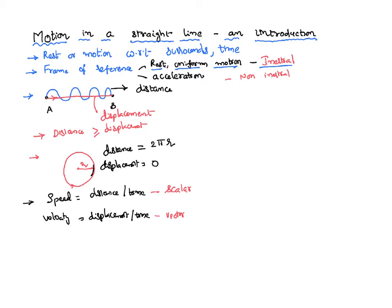If a body is covering equal displacement in equal intervals of time, then its velocity is said to be uniform velocity — meaning velocity is constant at all intervals of time. For example, a body starts from rest; in one second it covers 2 meters, so velocity is 2 m/s. In total 2 seconds it covers 4 meters — again velocity is 4/2 = 2 m/s.